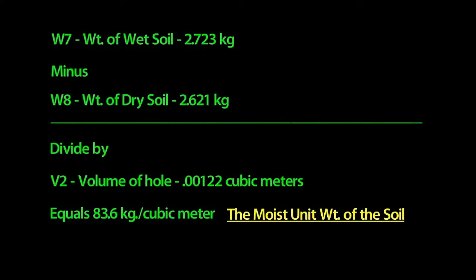We can calculate the moist unit weight of the soil by subtracting the dry weight W8 from the wet weight W7 and dividing that number by the volume of the hole V2. We get 83.6 kilograms per cubic meter.